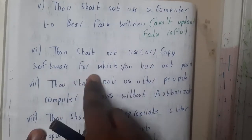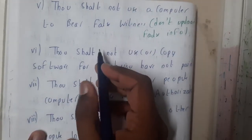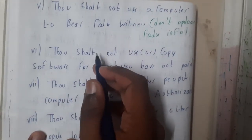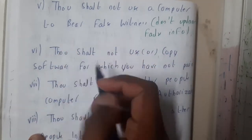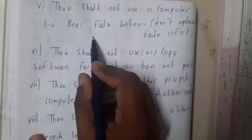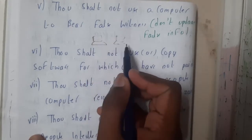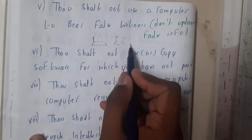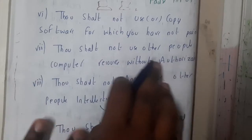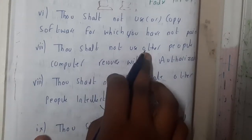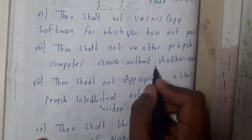The sixth commandment: do not use or copy software which you have not paid for. This is one of the most common things — most of us install the full version of software without buying it. That falls under this commandment. Also, do not use other people's computer resources without authorization.